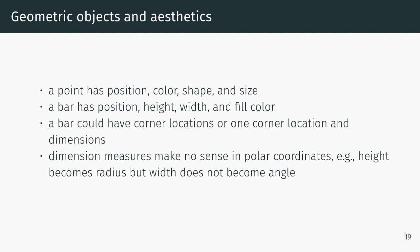Geometric objects and aesthetics: a point has position, color, shape, and size. A bar has position, height, width, and fill color. A bar could have corner locations or one corner location and dimensions. Dimension measures though don't make sense in polar coordinates. For example, height could become radius but width doesn't become angle.